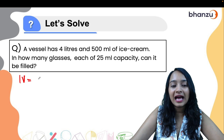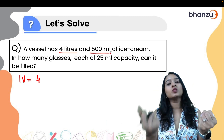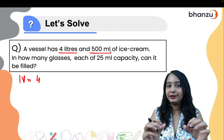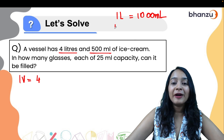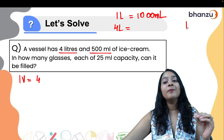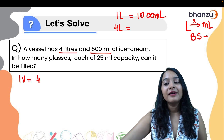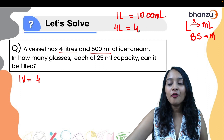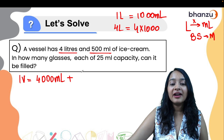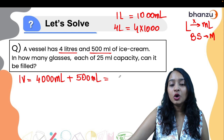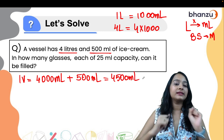Let's solve a question: a vessel has 4 liters and 500 ml of ice cream. We need to convert everything to ml. Since you can't mix liters and ml, we'll convert both to ml. One liter is 1000 ml, so 4 liters equals 4000 ml. Adding the 500 ml gives us a total of 4500 ml of ice cream in the vessel.